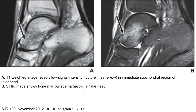The T1-weighted image revealed low signal intensity in Image A, representing the fracture line as indicated by the arrow, in the immediate subchondral region of the talar head. Image B, the STIR image, showed bone marrow edema in the talar head as indicated by the arrow.